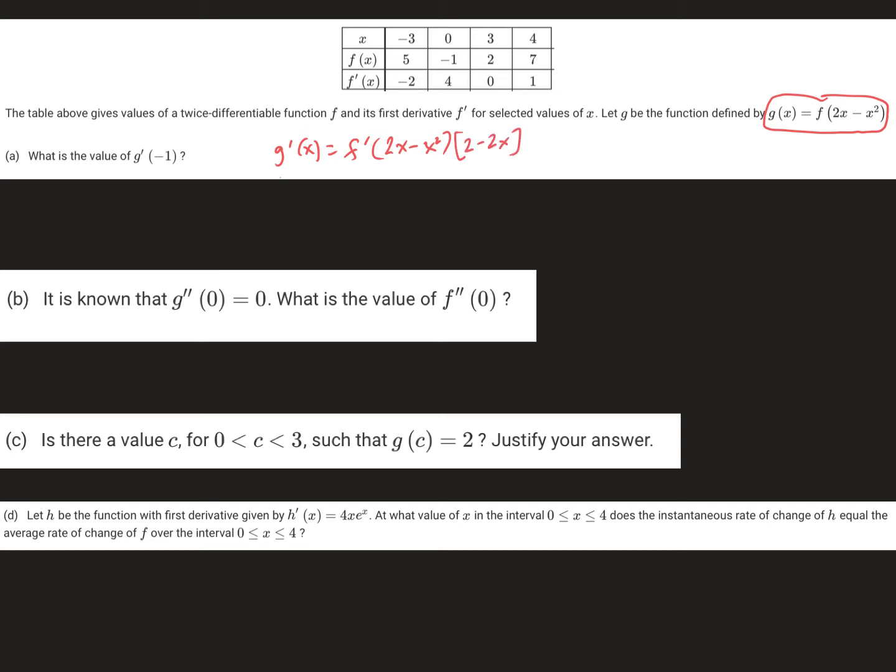Now I'm ready to find g prime of negative 1, so I plug in negative 1 for all the x's. That will be negative 2 minus positive 1, so negative 3. And then times 2 minus negative 2, so 4. And then f prime of negative 3 is given in the table, it's negative 2. So this is negative 2 times a positive 4, which is negative 8.